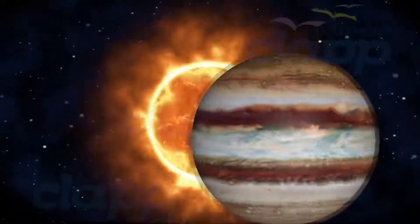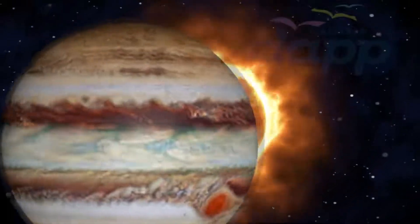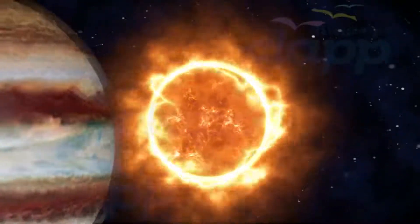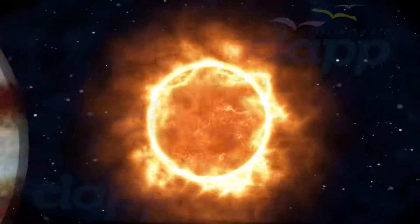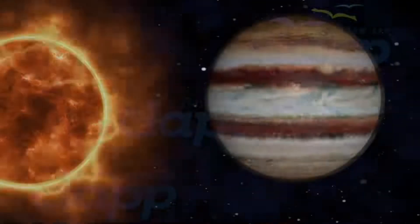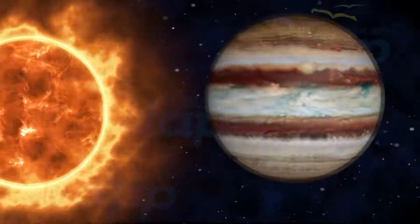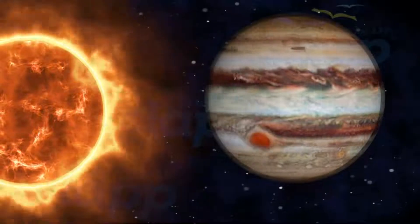It likely has a rocky core of heavier elements, but like the other giant planets, Jupiter also lacks a well-defined solid surface. The ongoing contraction of its interior generates heat greater than the amount received from the Sun.